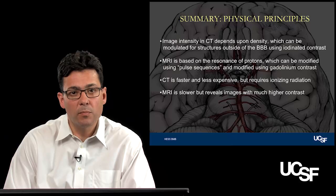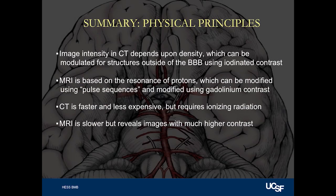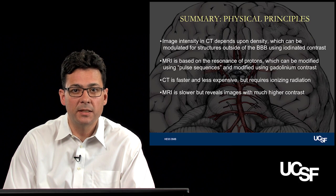In summary, we've focused on the physical principles of MRI and CT. CT image intensity is related to tissue density, with limited contrast derivable from density — you can see CSF, gray and white matter, and bone, or inject contrast to modulate tissue contrast within vessels. MRI is much more flexible, based on the resonance of protons modifiable via pulse sequences to emphasize different tissue properties. You can also give gadolinium in MRI to highlight vessels. CT is faster and less expensive, but requires ionizing radiation. MRI is slower but provides much higher tissue contrast, representing the ideal brain examination available at present.